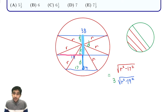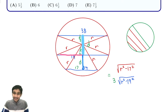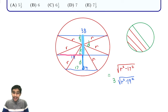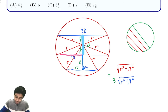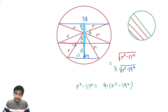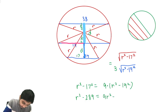Squaring both sides to eliminate the square roots — we don't need to worry about negative values since r > 19 > 17 — we get: r² − 17² = 9(r² − 19²), which simplifies to r² − 289 = 9r² − 2349.